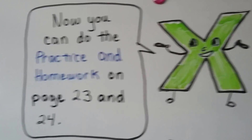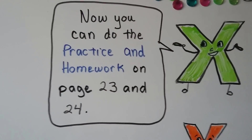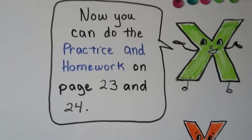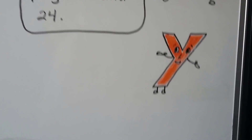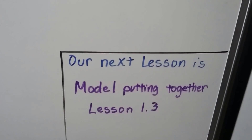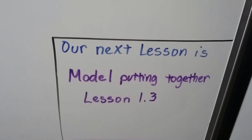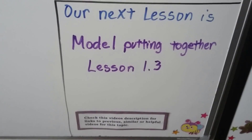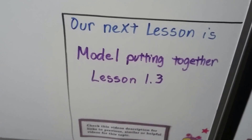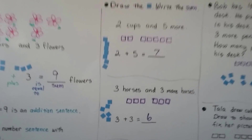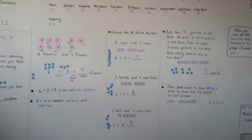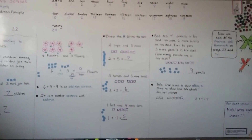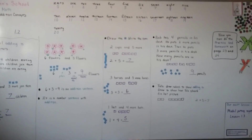Now you can do the practice and homework on pages 23 and 24 in the Go Math Grade 1 textbook. Our next lesson is going to be Model Putting Together — that's Lesson 1.3. If you've missed any of the previous videos, you can click on the description of this video to get a link back to the previous ones. I hope this was helpful. If it was, please hit the like button. See you next video — have a great day!